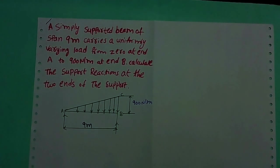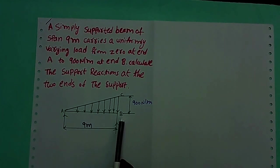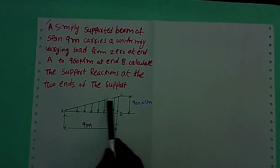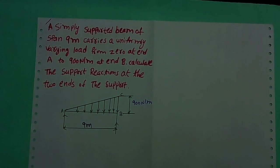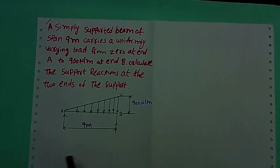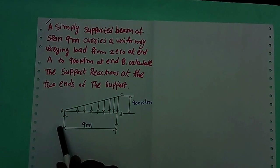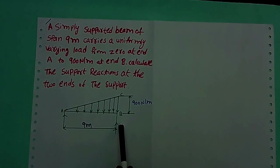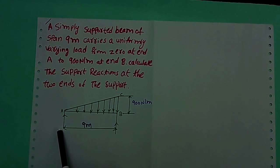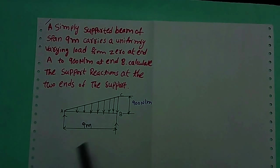This is simply supported beam AB. This is the UVL — uniformly varying load. For this beam, you have to find the support reactions. Here we have support A and support B, meaning we have to find the reaction at A and reaction at B.